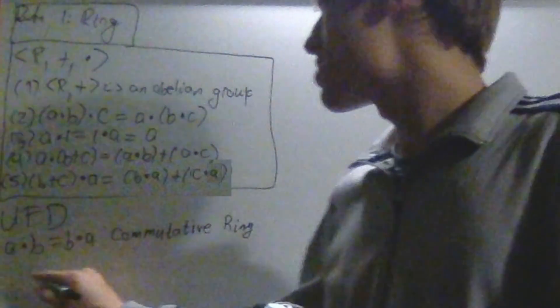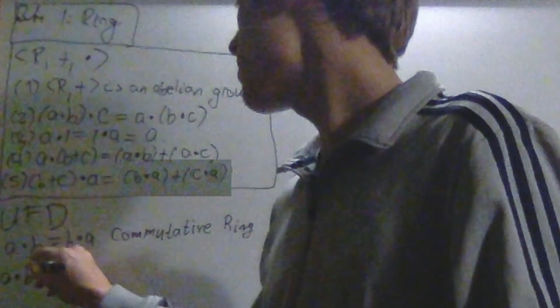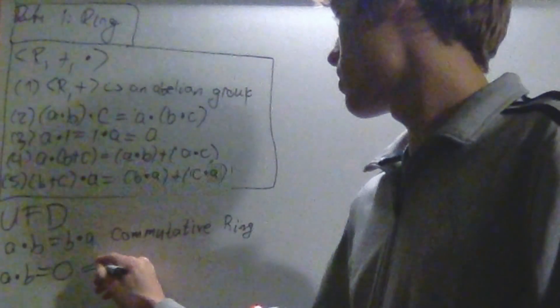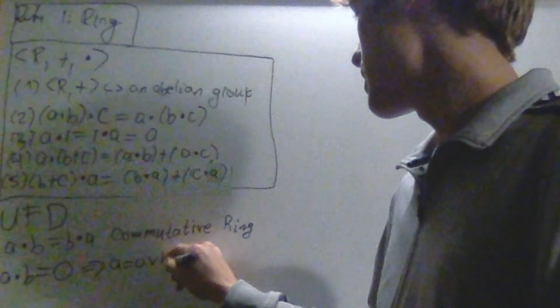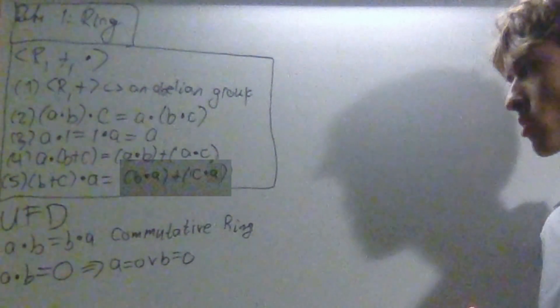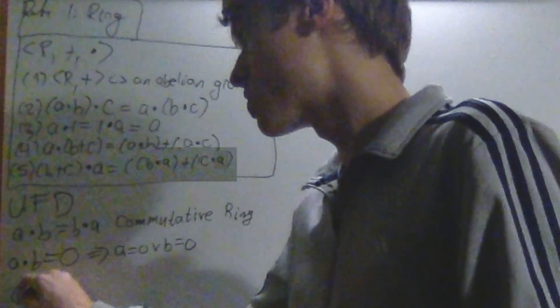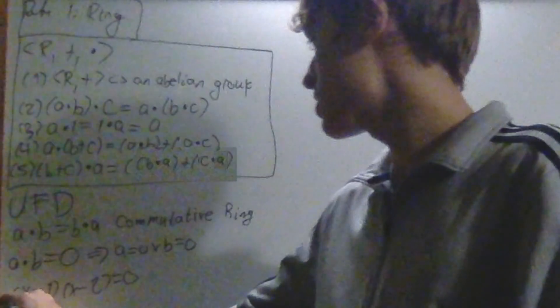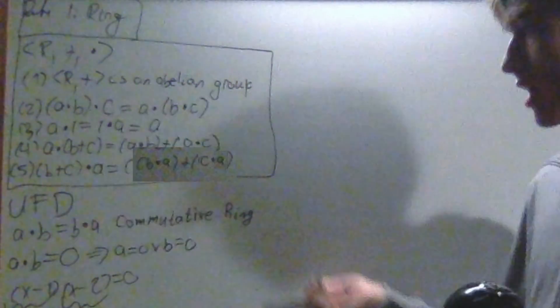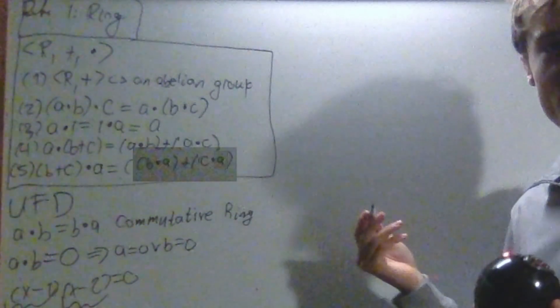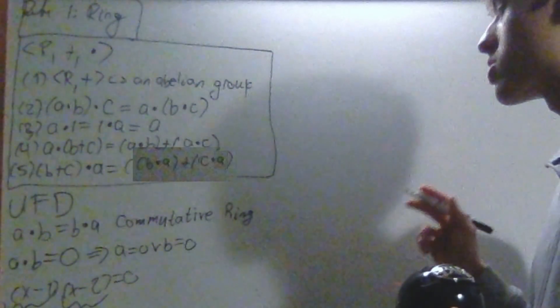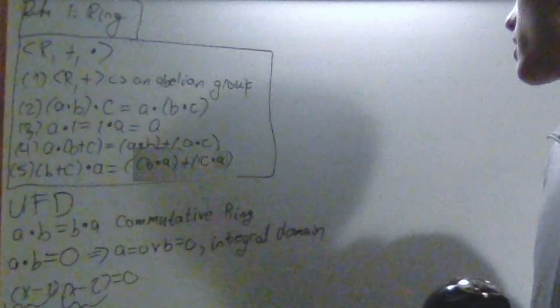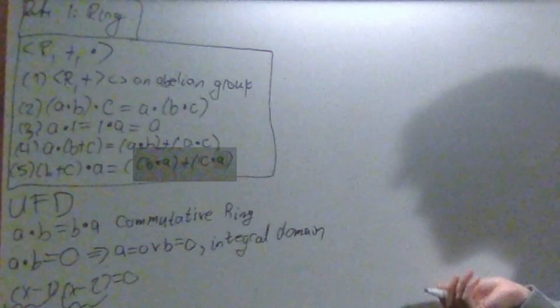There's another type, which is called an integral domain, which deals with when you multiply two values and you set it equal to zero. Well, that means that either a is zero or b is zero, right? That's sort of the idea behind factoring. If I'm trying to solve x minus one times x minus two equals zero, I use the fact that either this is going to be zero or that's going to be zero. But this property, where you can factor and then solve polynomials, is not always true. And it's only true for what's called an integral domain.